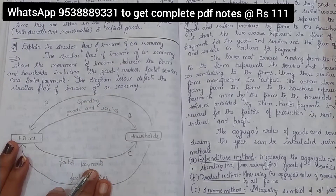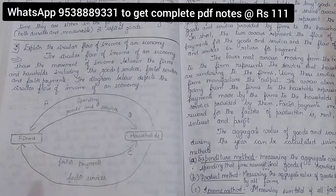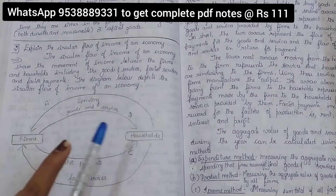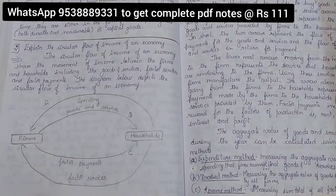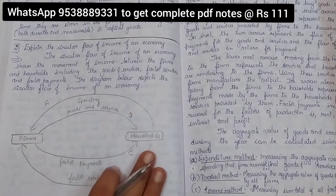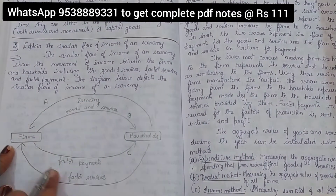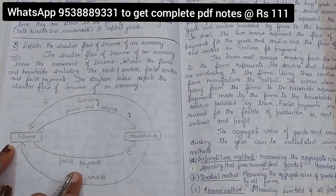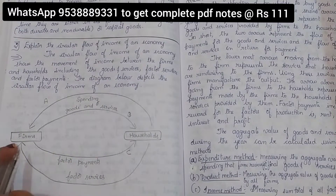Circular Flow of Income — you have to remember 2 terms first. If you can see, this is in the shape of a circle. That is why we call it the Circular Flow of Income.